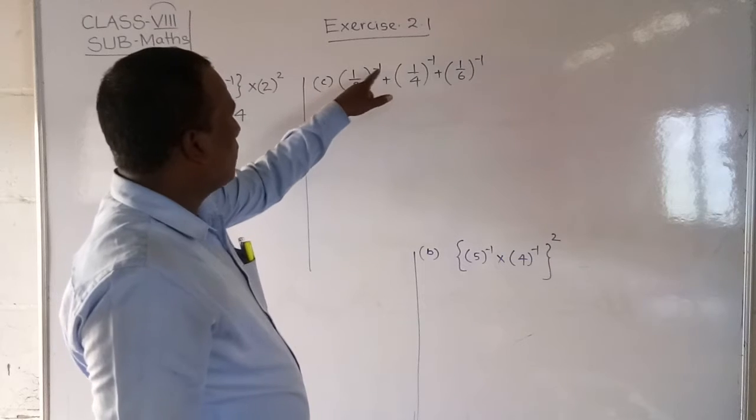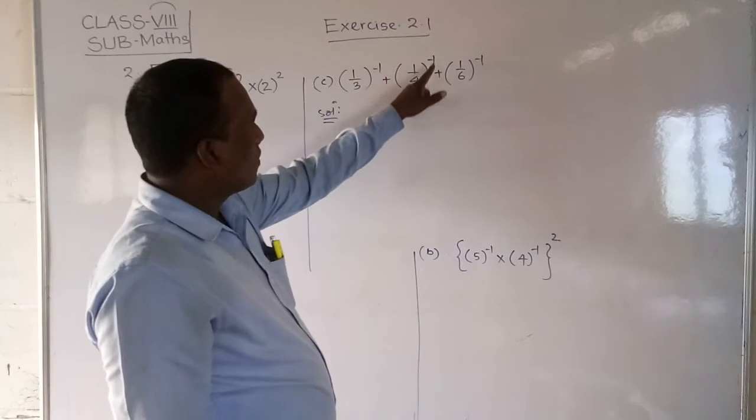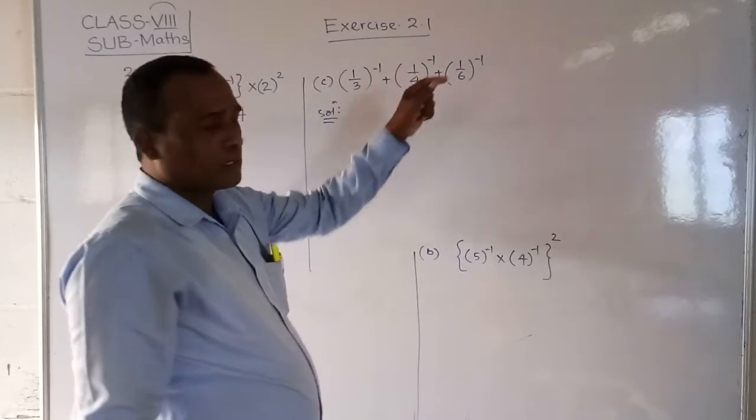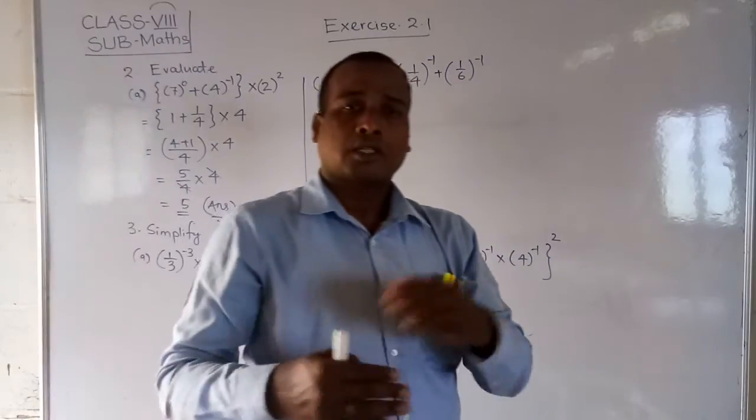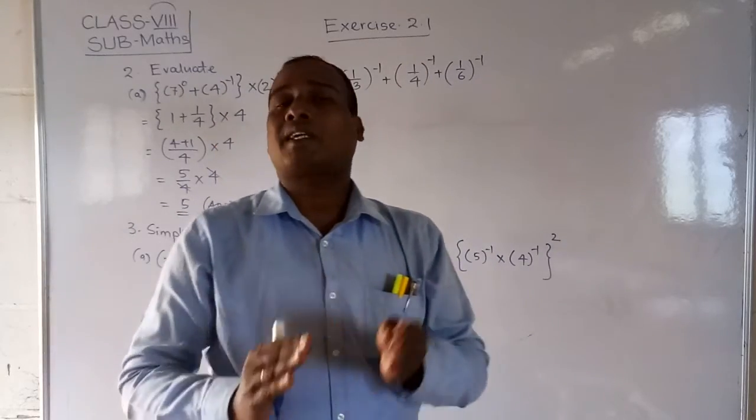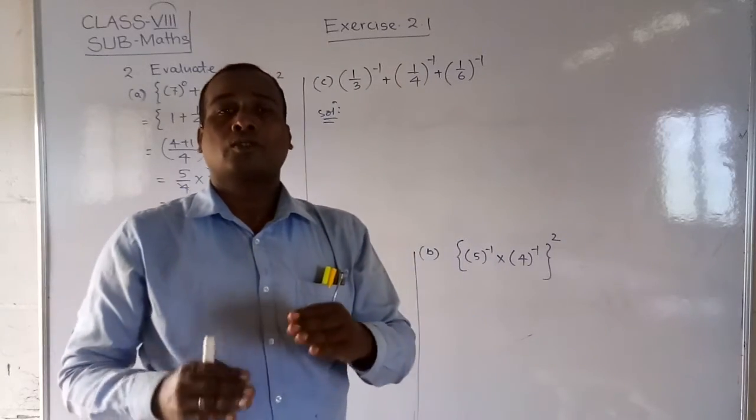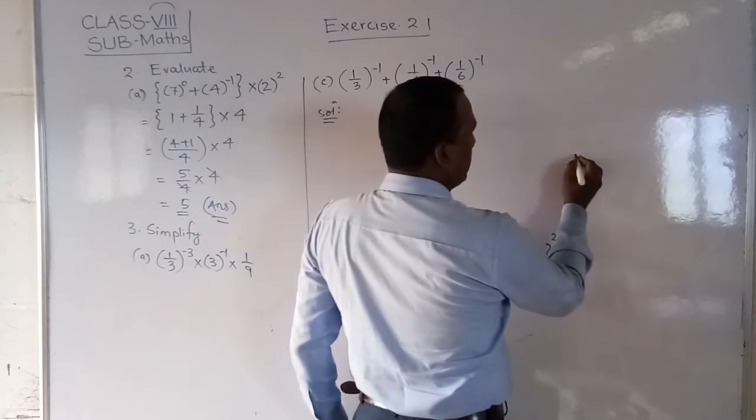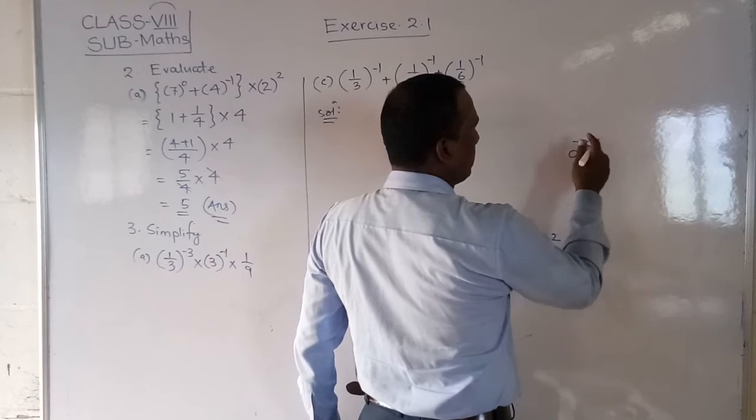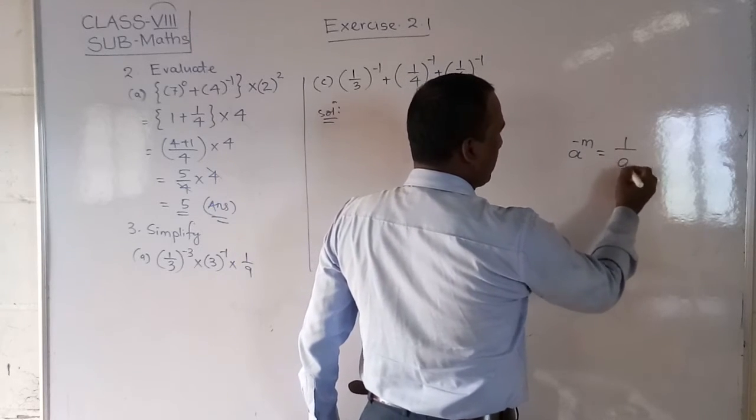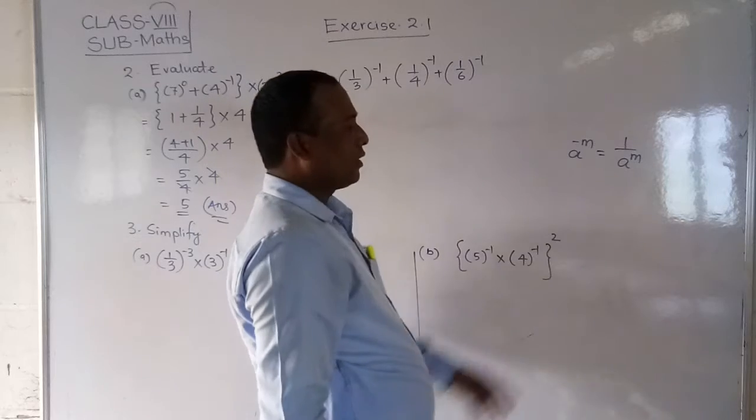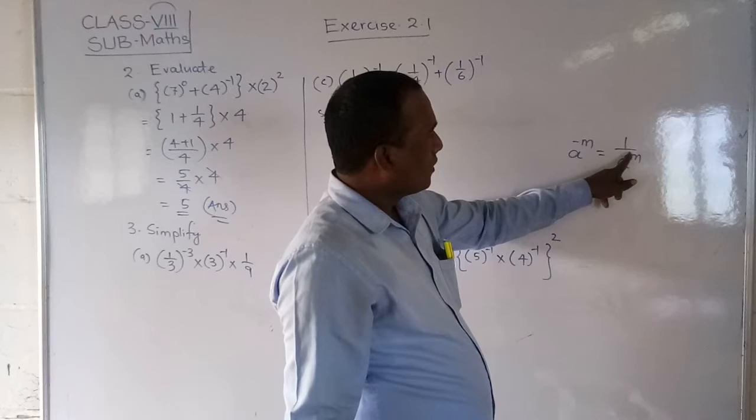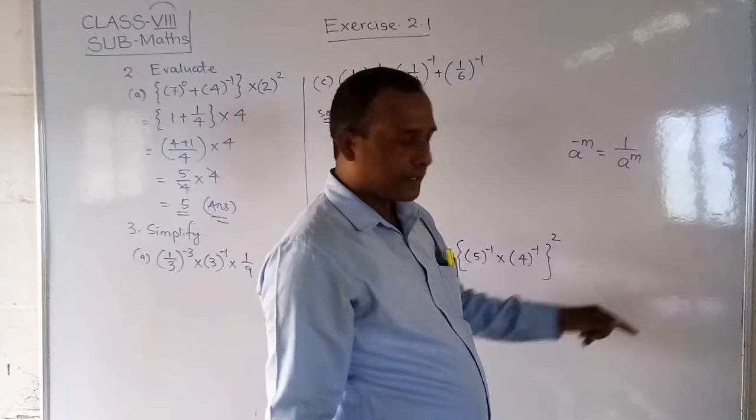Second question. 1 by 3 to the power minus 1, plus 1 by 4 to the power minus 1, plus 1 by 6 to the power minus 1. That means the negative power. While we are solving, if negative power is there, first of all, immediately you should solve it in positive. So for that, what do you have to do? You have to make it reciprocal. Remember students, A to the power minus M, that means the value is 1 by A to the power M. That means the sign it will remove. For that, 1 by you have to make.